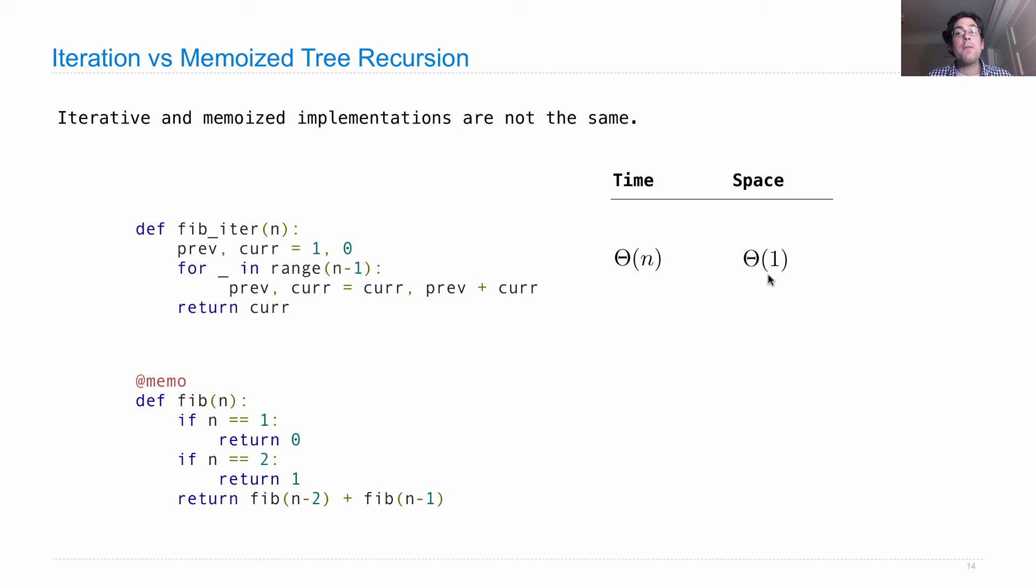The space we say is theta of one. Why one? Theta of one is used whenever there's a constant amount of something. The constant amount of space used is because we're not creating any new frames here, and there's only a fixed number of names: prev, curr, and that's it. So we have a constant amount. We say space is theta of one.